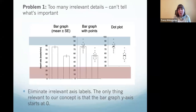My next step was to actually create the graphs and fill in the details. This was my first version — I filled in the three graphs with colors and labeling as in the original. As you can see, this figure is a mess. There's a lot going on, there are too many irrelevant details, and as a result we can't tell what's important.